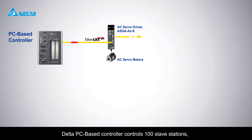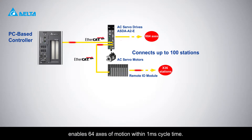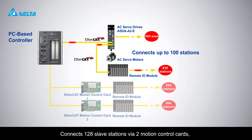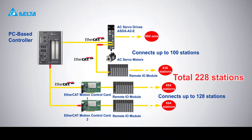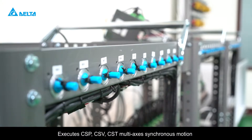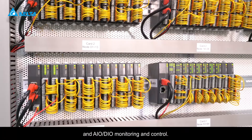Delta's PC-based controller controls 100 slave stations and enables 64 axes of motion within one millisecond cycle time. It connects 128 slave stations via two motion control cards for a total control of up to 228 stations. It can execute CSP, CSV, and CST multi-axis synchronous motion, as well as AIO or DIO monitoring and control.